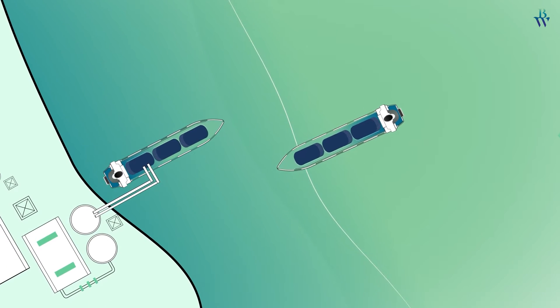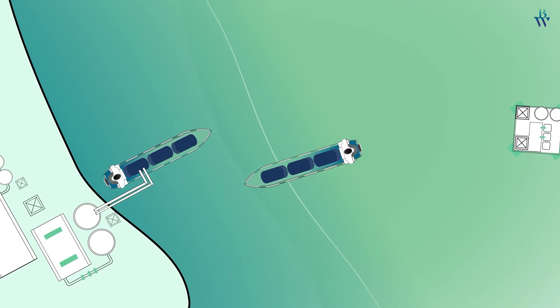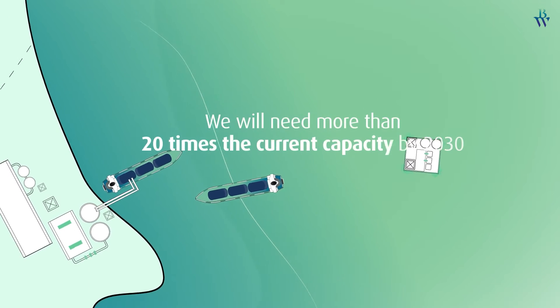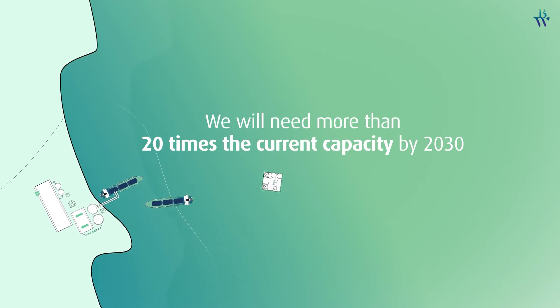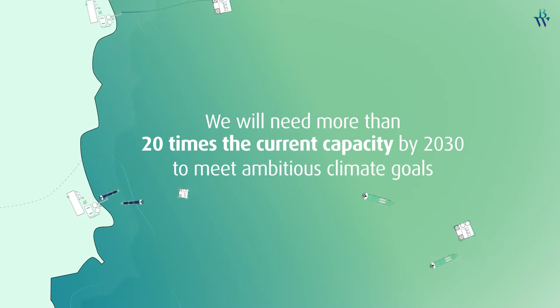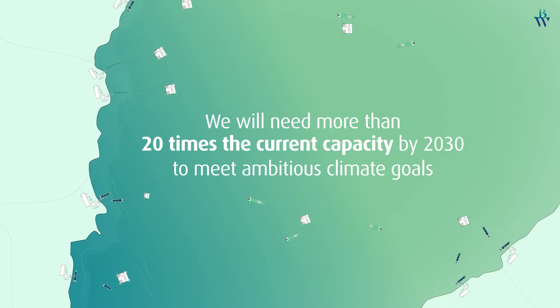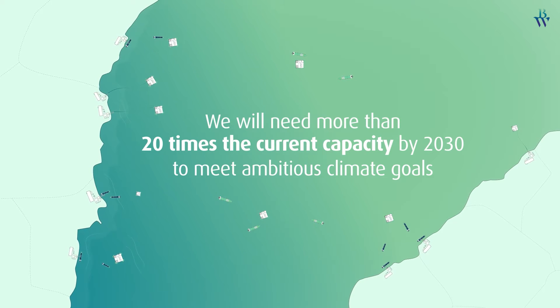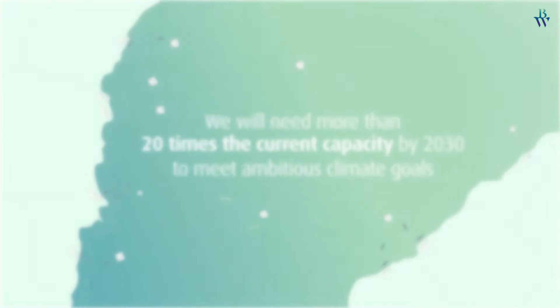CCS is an established technology and capture hubs are being developed. But we will need more than 20 times the current capacity by 2030 to meet ambitious climate goals. About 10 to 20 large hubs must go on stream every year if we are to succeed.